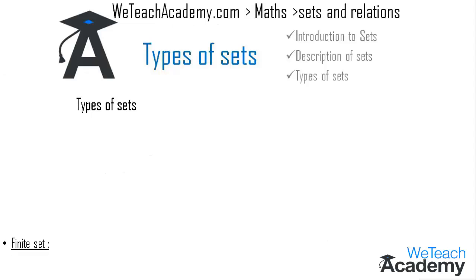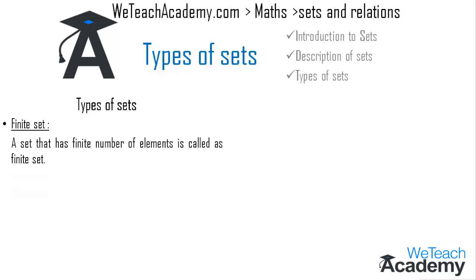Now let us discuss the types of sets. First, a finite set is a set that has a finite number of elements. For example, consider set X = {1, 3, 7, 9}. We observe that the elements are the odd natural numbers less than 10. Since this set consists of a finite number of elements, we call it a finite set.